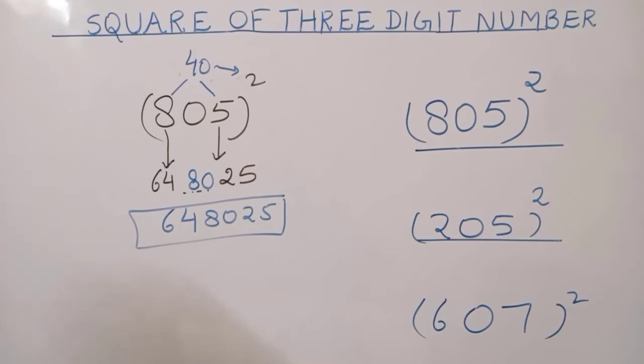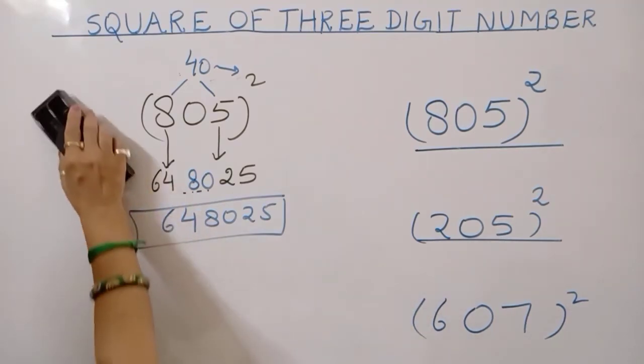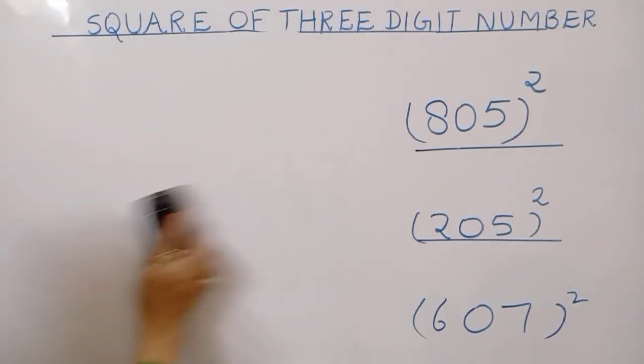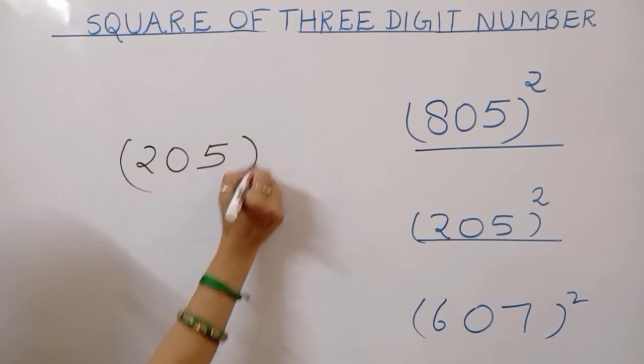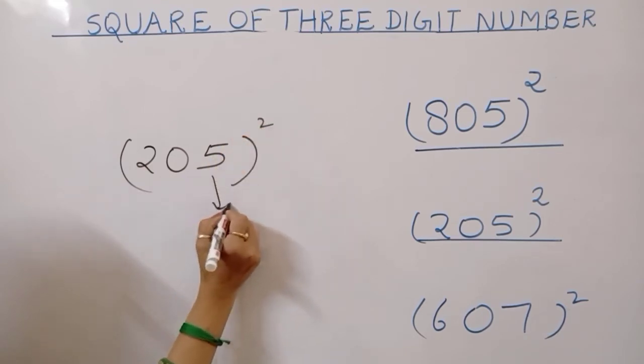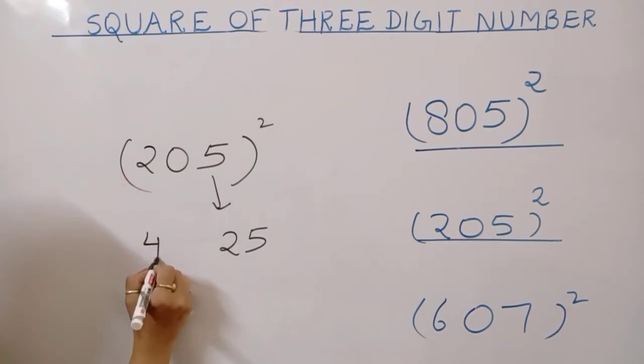Another question, how will you solve squaring of 205? Same method, you will use 205 square. Firstly, squaring of unit place, 25. And square of 2, 4.